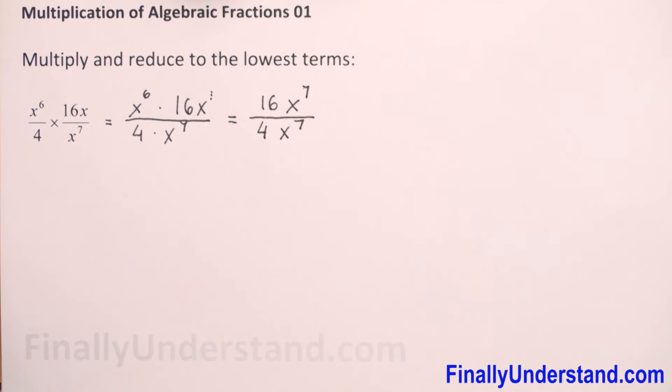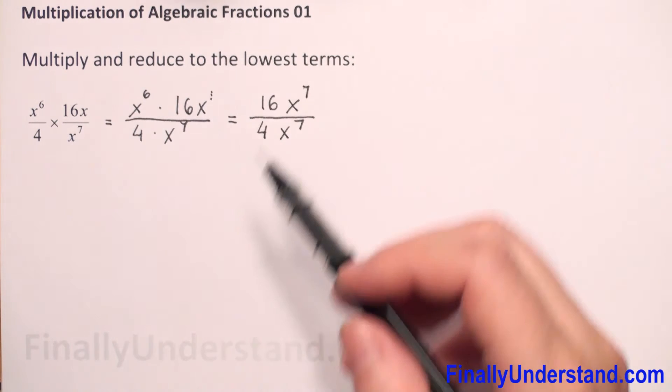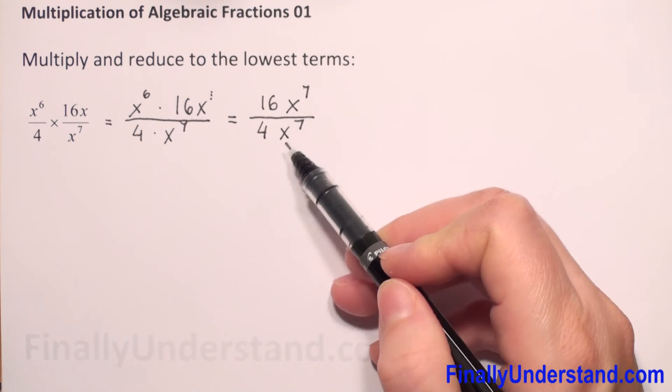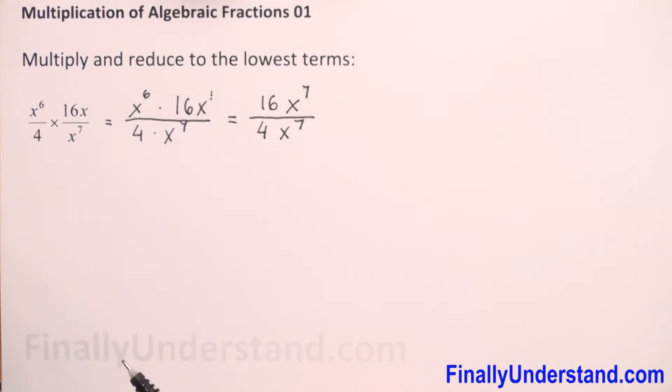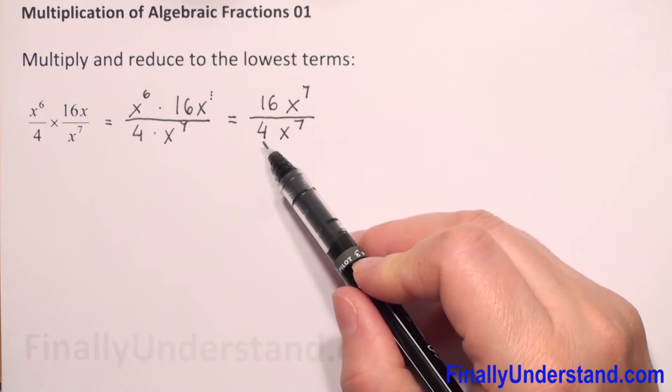We can reduce only when we have multiplication. Let's check: we have 16 times x to the 7th power in the numerator, and 4 times x to the 7th power in the denominator. We can reduce because we have multiplication. We reduce numerator with denominator.